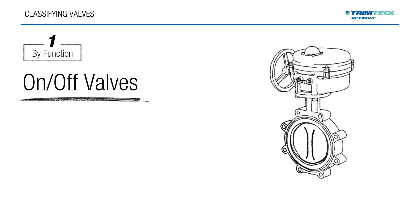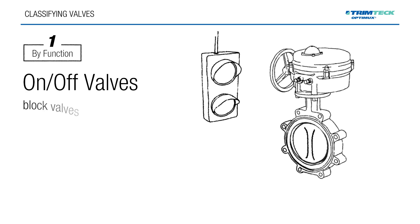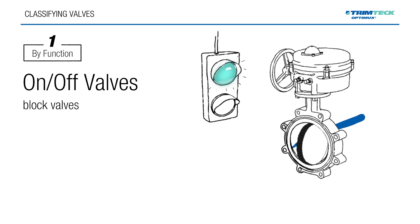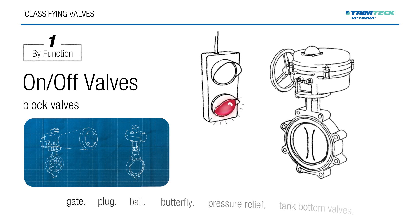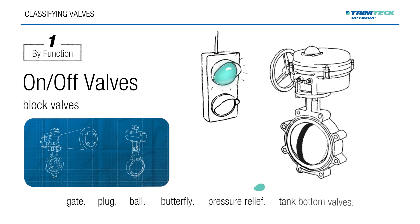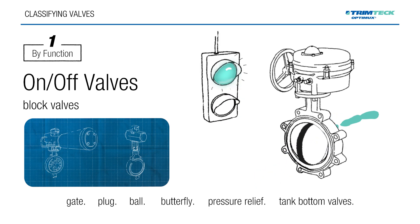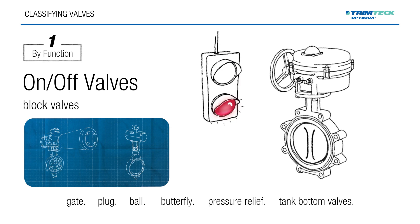On-off valves, also known as block valves, are used to start or stop the flow of process fluids. Examples include gate, plug, ball, butterfly, pressure relief, and tank bottom valves. They are commonly used when media must be diverted or as part of safety management systems.